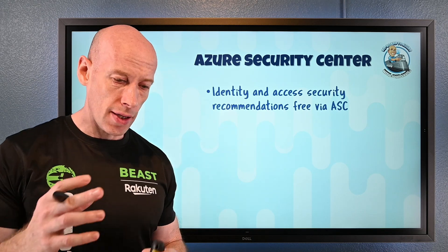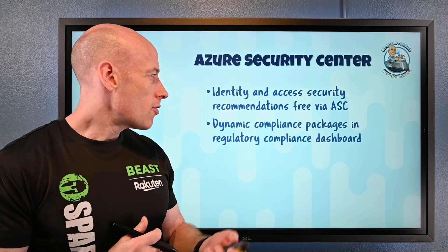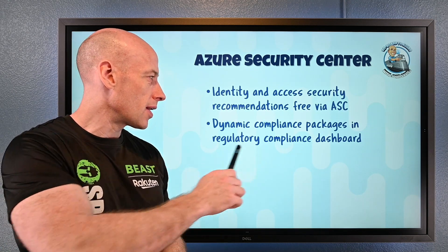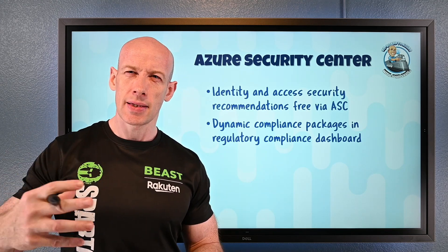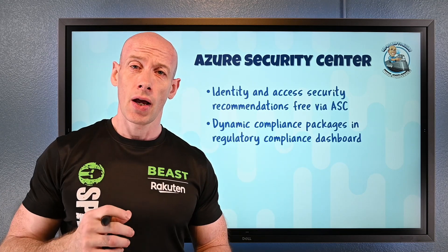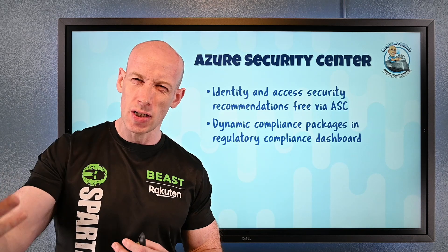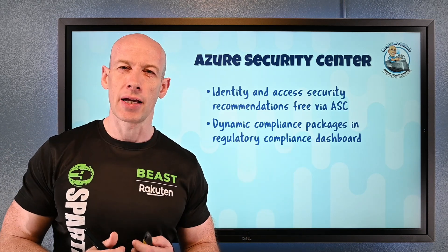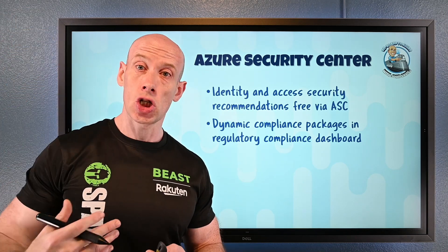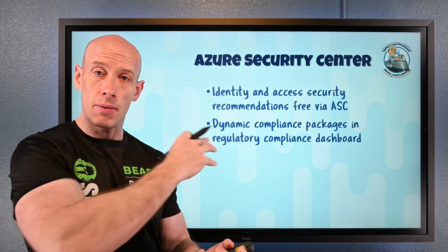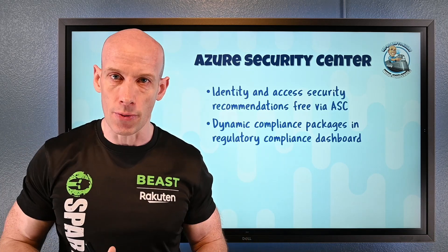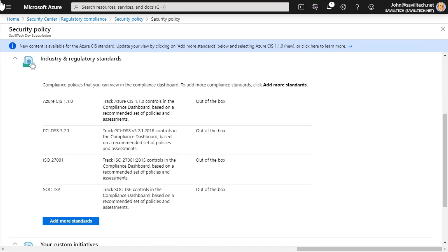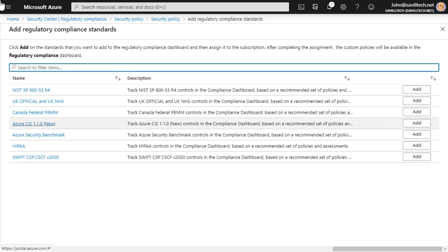In Azure Security Center, identity and access security recommendations are now free — they used to be part of the higher tier but Microsoft is now including them in the free tier. There are also new dynamic compliance packages for regulatory compliance. These are manifested as policy initiatives, and as requirements change, the packages automatically update those initiatives with new policies — so you'll just automatically get the new ones.